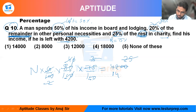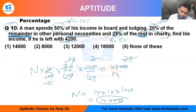Now let me cross multiply. We have 1, 2, and 3 zeros, so income N will be equal to 14 multiplied by 10 multiplied by 100. It comes out to be 14,000. That is option number 1.